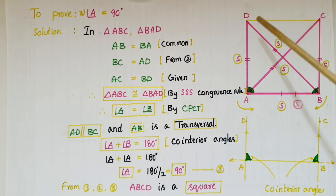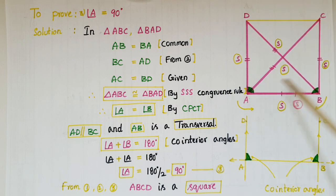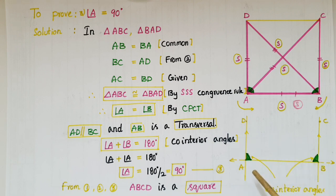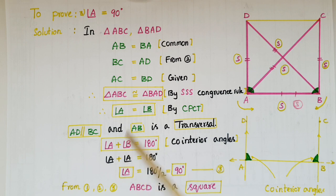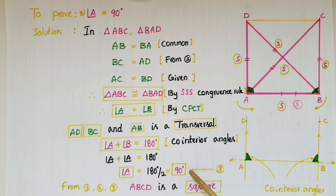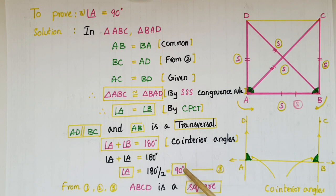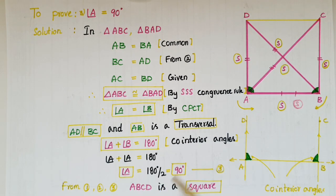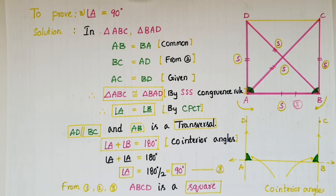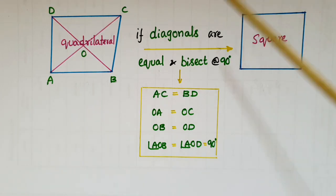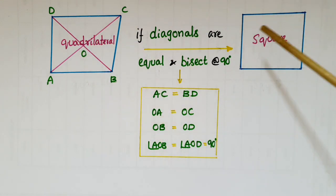Since AD is parallel to BC and AB is a transversal, angles A and B are co-interior angles. The co-interior angle sum is 180 degrees, so angle A plus angle B equals 180 degrees. Since angle A equals angle B, we get angle A plus angle A equals 180, so angle A equals 90 degrees. Therefore ABCD is a parallelogram with all sides equal and angle A equal to 90 degrees — hence ABCD is a square. This proves that if the diagonals of a quadrilateral are equal and bisect each other at 90 degrees, it is a square.